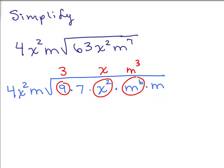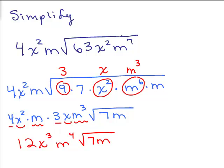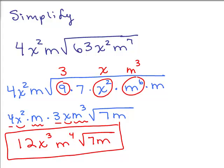Keep in mind we're assuming all variables are not negative, otherwise it gets more complicated with absolute value. Whatever is out in front gets multiplied by whatever is on top: 4x squared m times 3x m cubed, and what's left inside is 7m. So 4 times 3 is 12, x squared times x is x cubed, m times m cubed is m to the 4th — and the answer is 12x cubed m to the 4th times the square root of 7m.